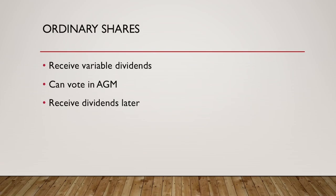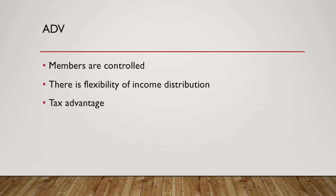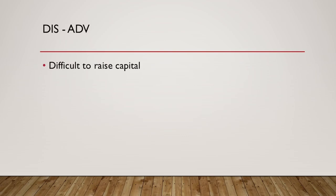Ordinary shareholders receive their dividends only after the preference shareholders receive theirs. Ordinary shares are also known as equity shares. The advantages include that members are controlled, there is flexibility of income distribution, and there is a tax advantage. The disadvantage includes that it is difficult to raise capital.